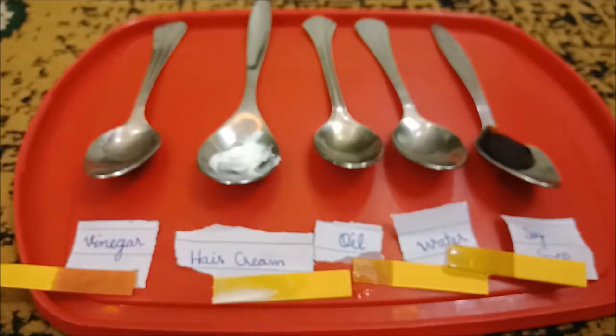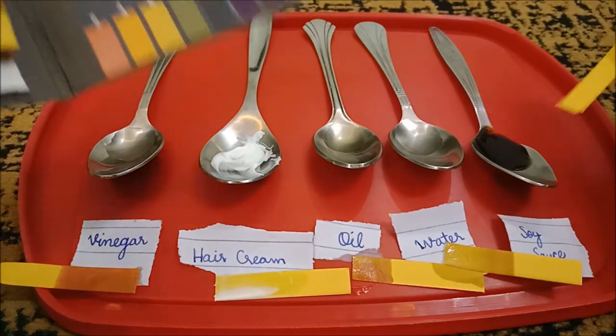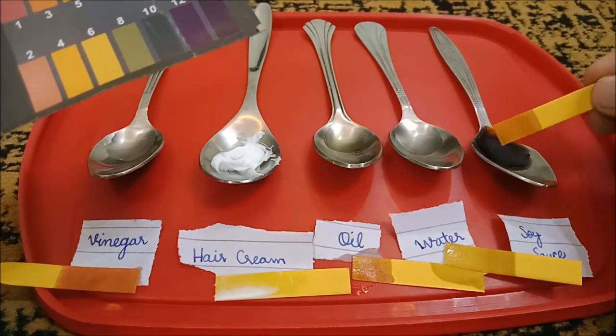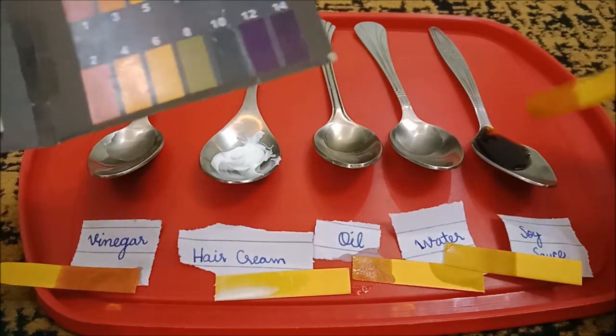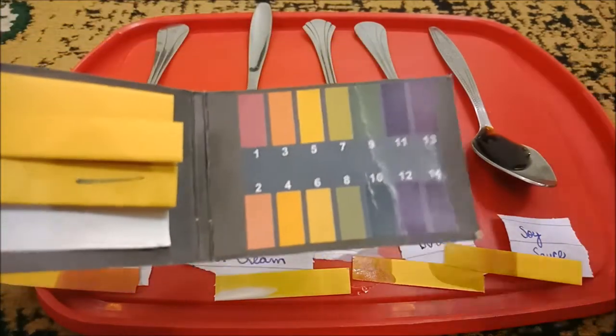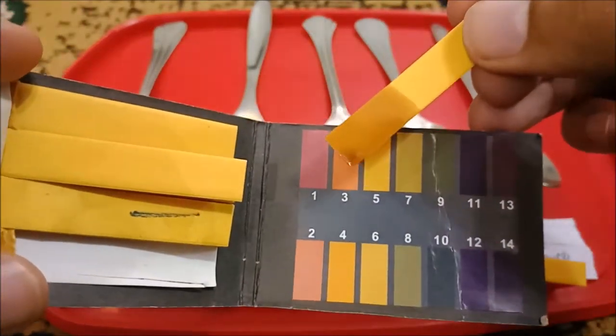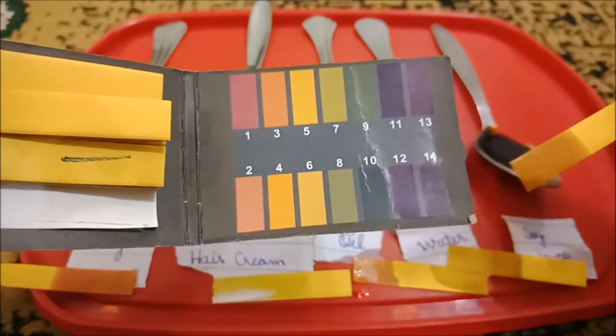Now we can do it with the soy sauce. Soy sauce is black, so maybe the paper might turn black too. Here we go with the soy sauce. Now it didn't turn black, it's actually turning into a color. This color is acidic. Yeah, wait a second. This color is like 3 or 4 or something, so that's in the acidic category.